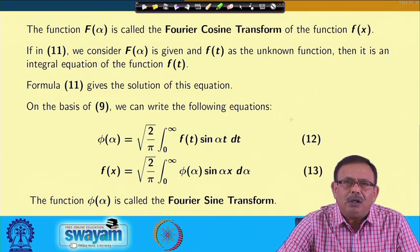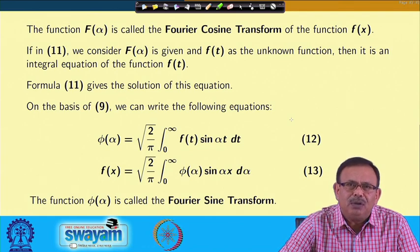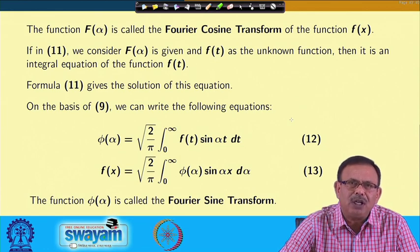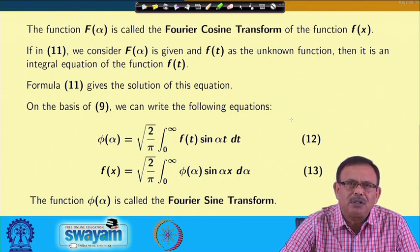So we have now defined two things: the Fourier sine transform and the Fourier cosine transform. For the sine transform the kernel is sin(αt), whereas for the cosine transform the kernel is cos(αt), just as for the Laplace transform the kernel was e^(iαx).